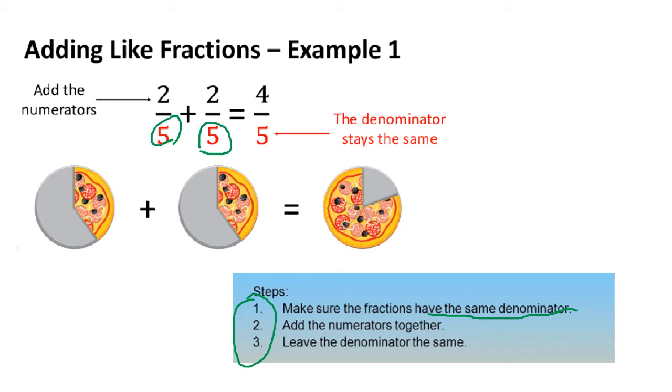Add the numerators together. So, we need to add the numerators together. That is what we get for 2 plus 2. Leave the denominator the same. We simply write the denominator without changing. We don't add the denominators, only the numerators.